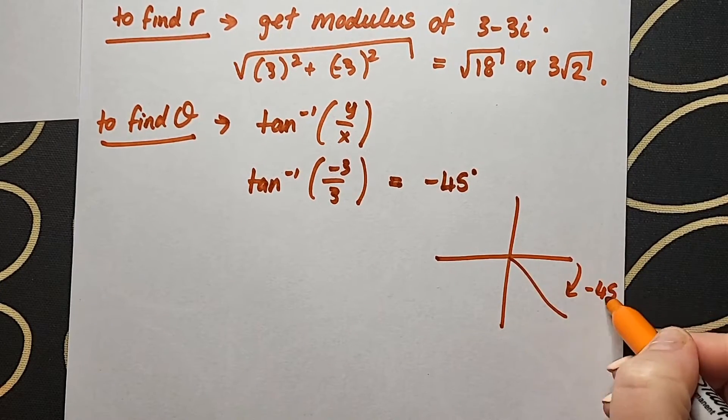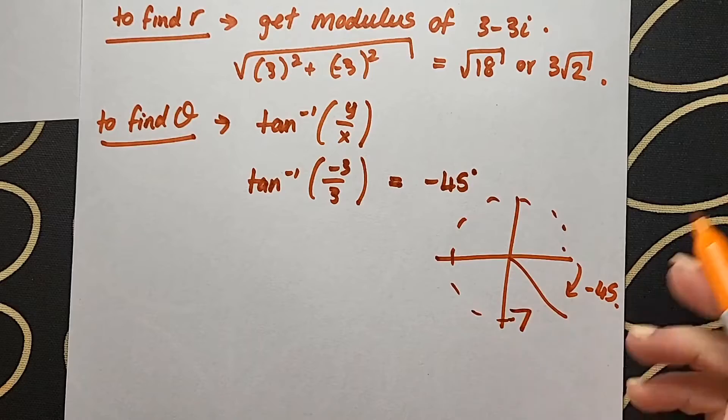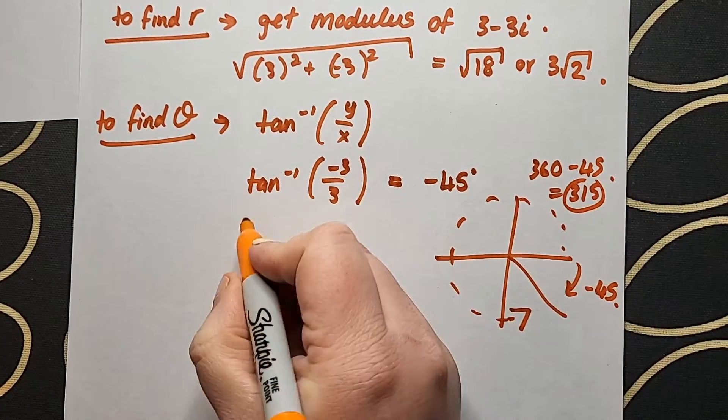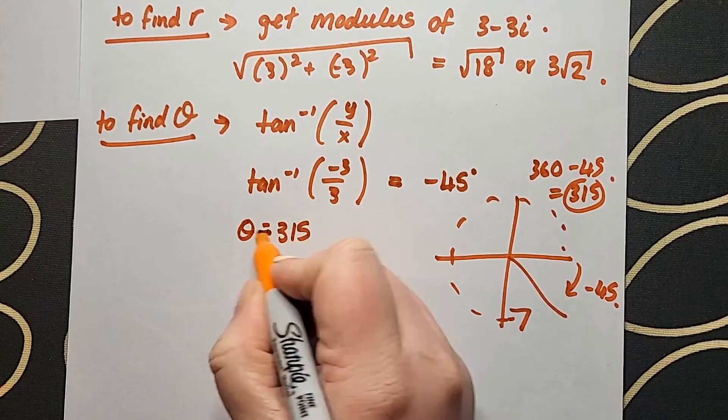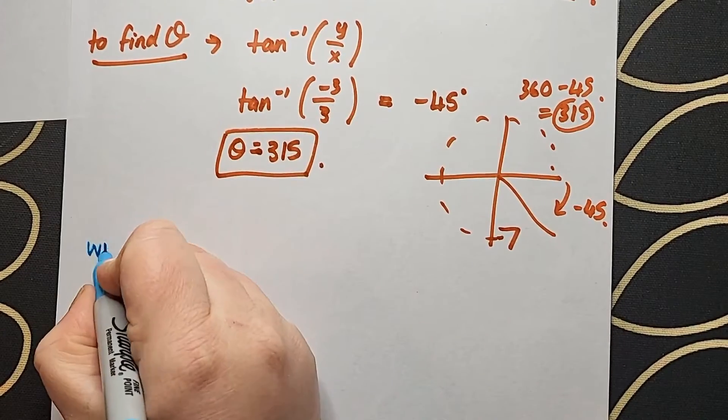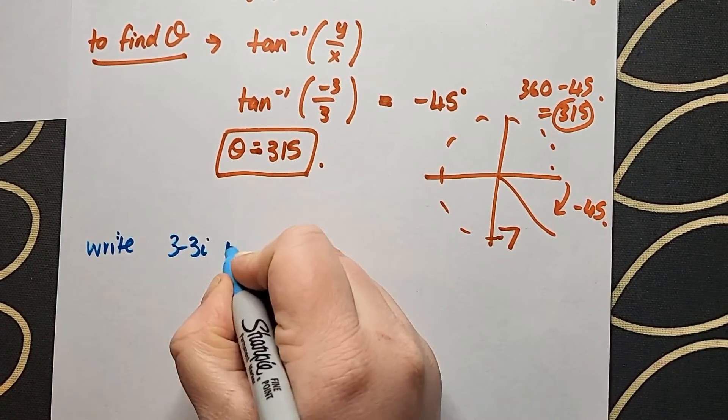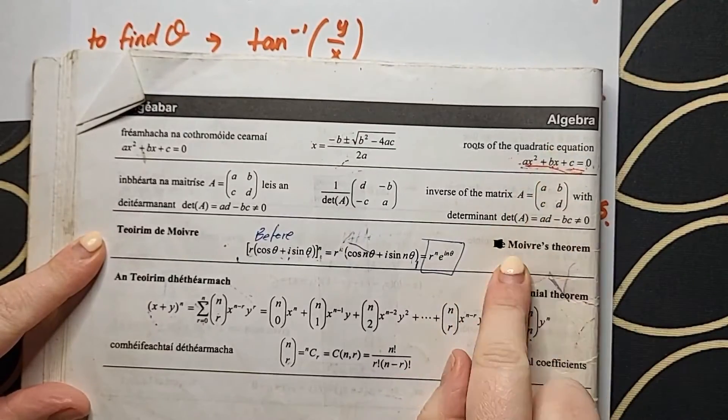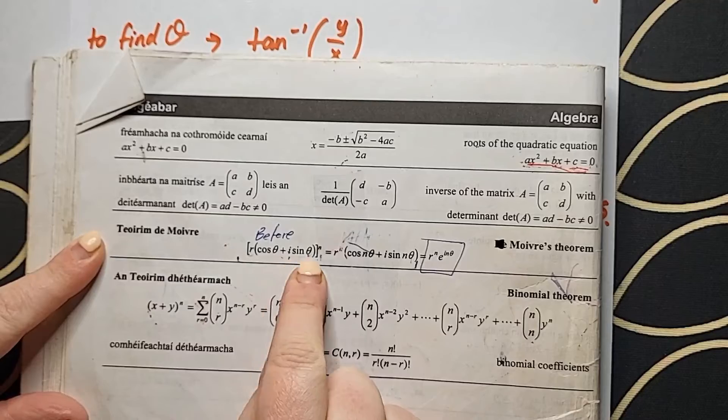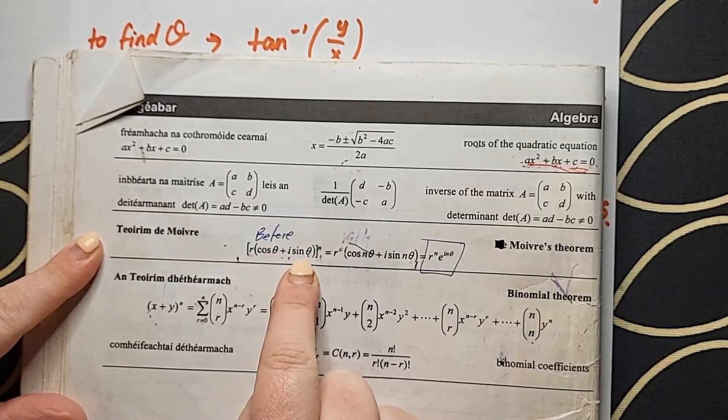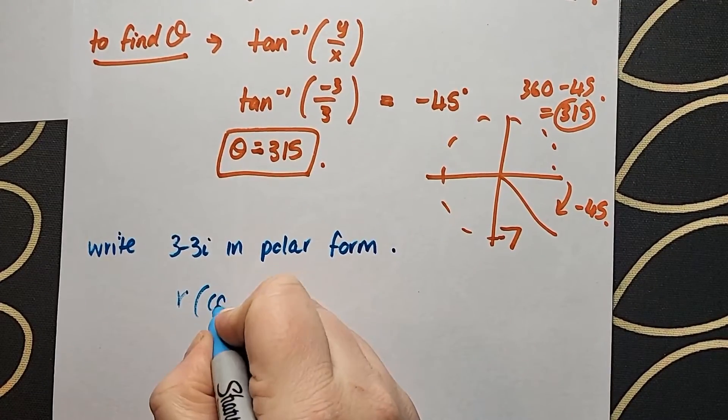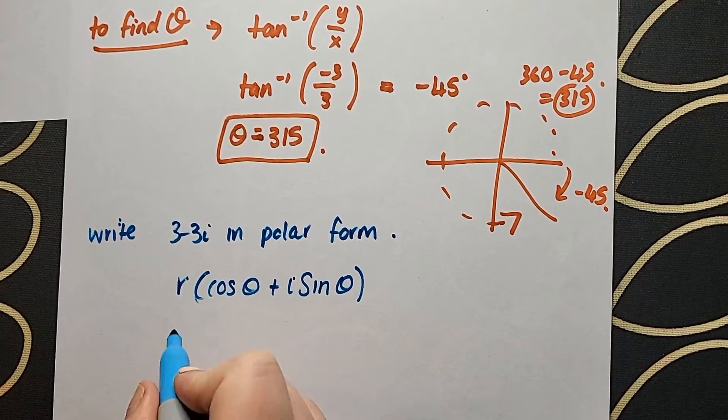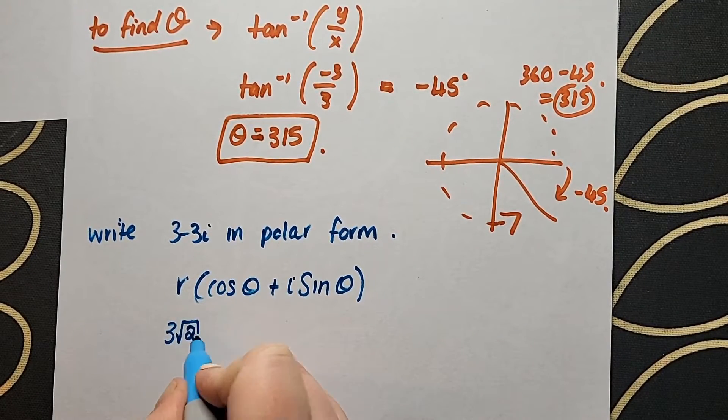Looking at my diagram here, I can see that when I actually calculate that properly it ends up being 315 degrees. Once I have all that established, I convert 3 minus 3i into polar form. A quick little hack here for you using your log tables - in the algebra section, De Moivre's theorem is there, but that first little section is the polar form. So if you find it hard to remember, it is there for you. There it is and I sub in my r and my theta.